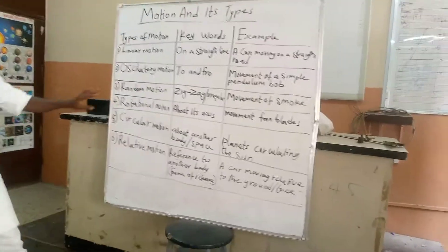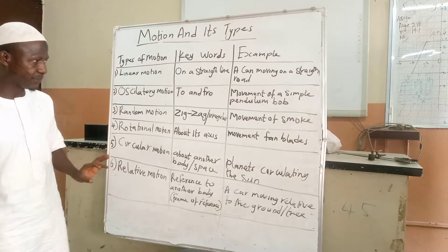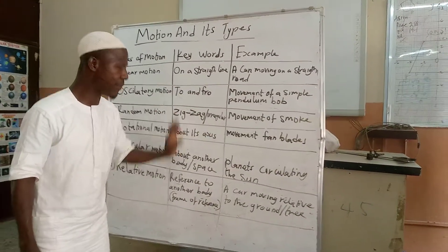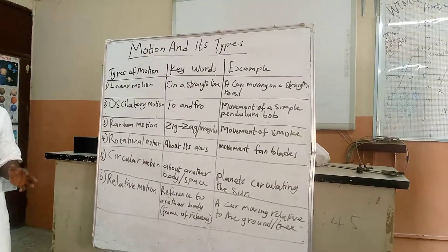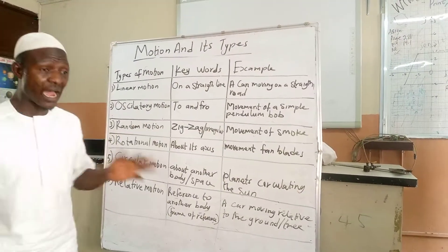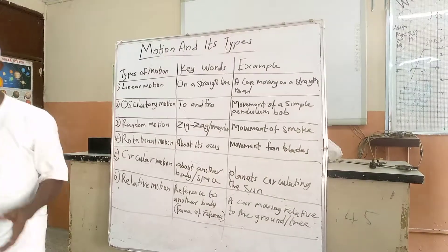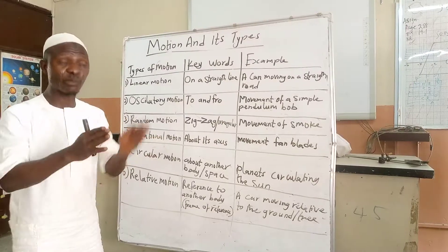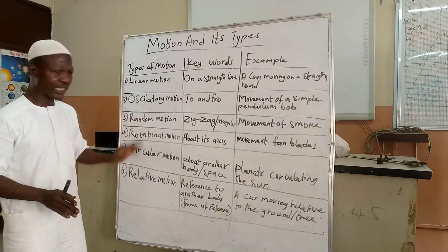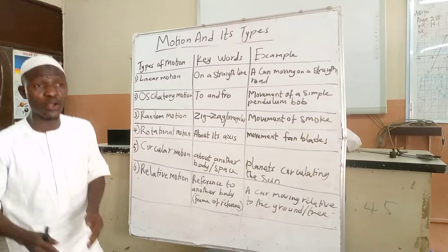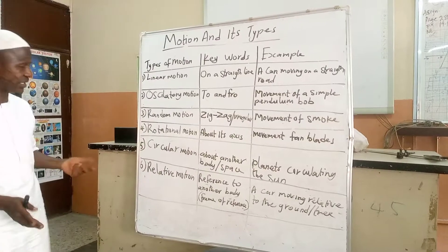Another type of motion is random motion, and the keyword for that is 'zigzag or irregular manner.' The movement of a crowd is an example — if something happened among students in a class, they would just be moving anyhow, here and there, zigzag, without a specific direction. The movement of a butterfly — sometimes flying up, sometimes coming down — is also an example of random motion. Some people also include the movement of a snake.